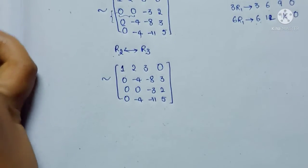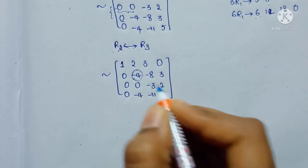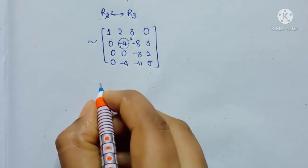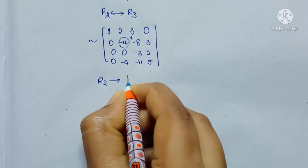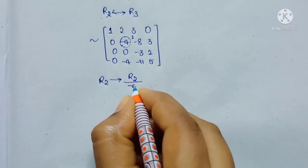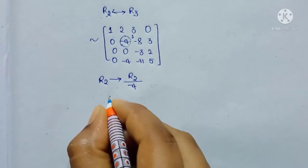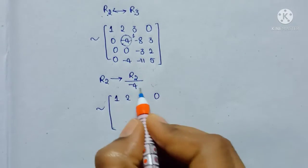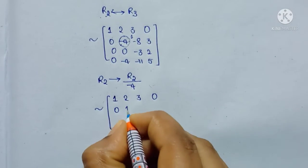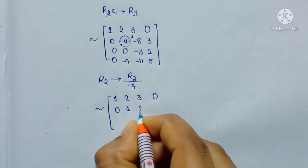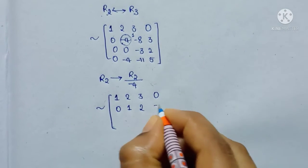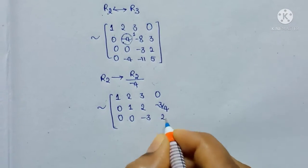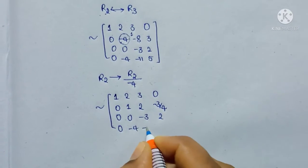We need to convert the leading element of R2 into 1. So R2 is divided by −4. Row 1 unchanged: 1, 2, 3, 0. R2 divided by −4: 0/−4=0, −4/−4=1, −8/−4=2, 3/−4=−3/4. Row 3: 0, 0, −3, 2. Row 4: 0, −4, −11, 5.